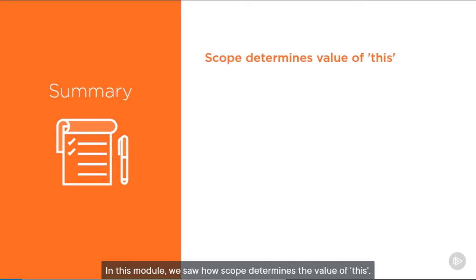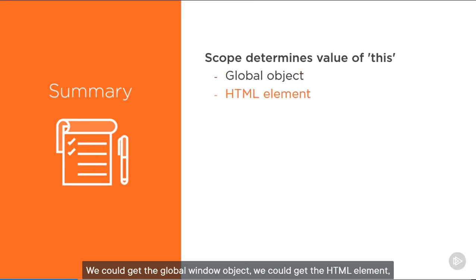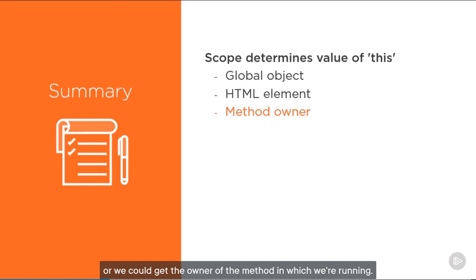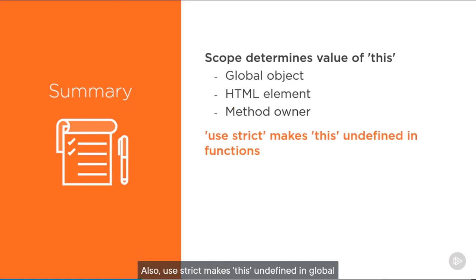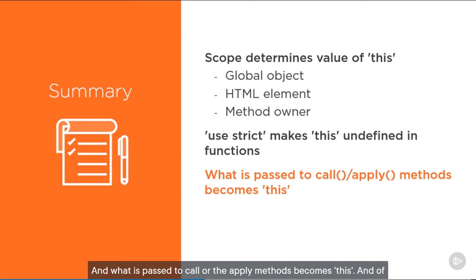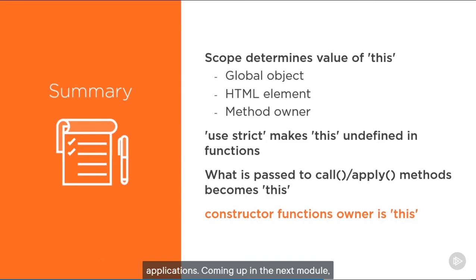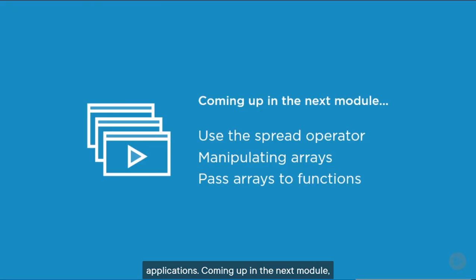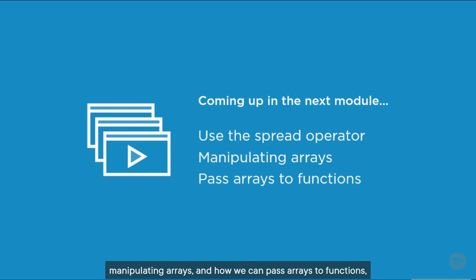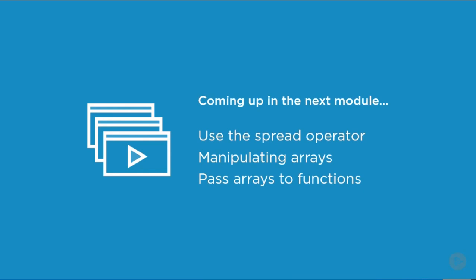In this module, we saw how scope determines the value of 'this'. We could get the global window object, the HTML element, or the owner of the method in which we're running. 'Use strict' makes 'this' undefined in global functions. What is passed to call or apply becomes 'this'. And in constructor functions, the owner is 'this'. Coming up in the next module, we'll talk about the spread operator, manipulating arrays, and passing arrays to functions. I hope you'll join me for the next module.